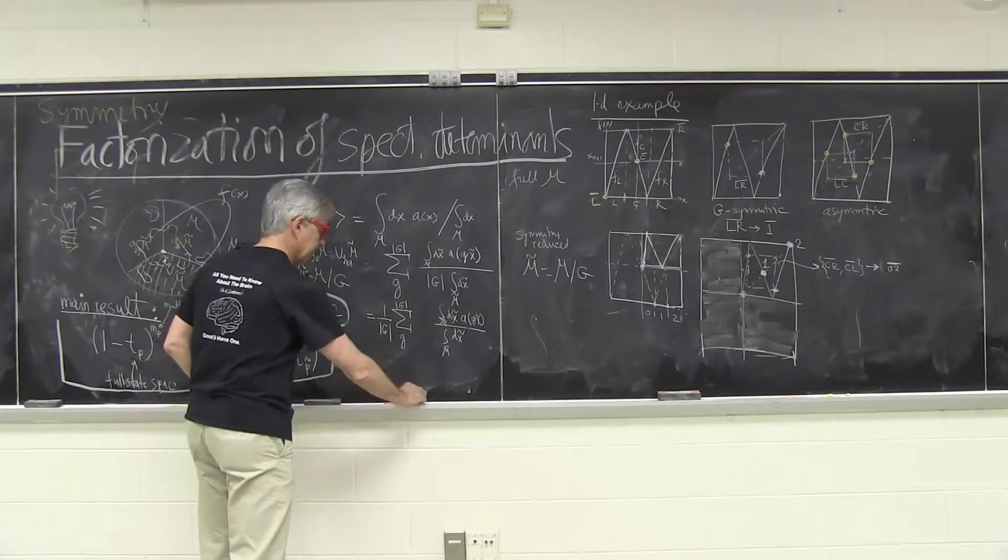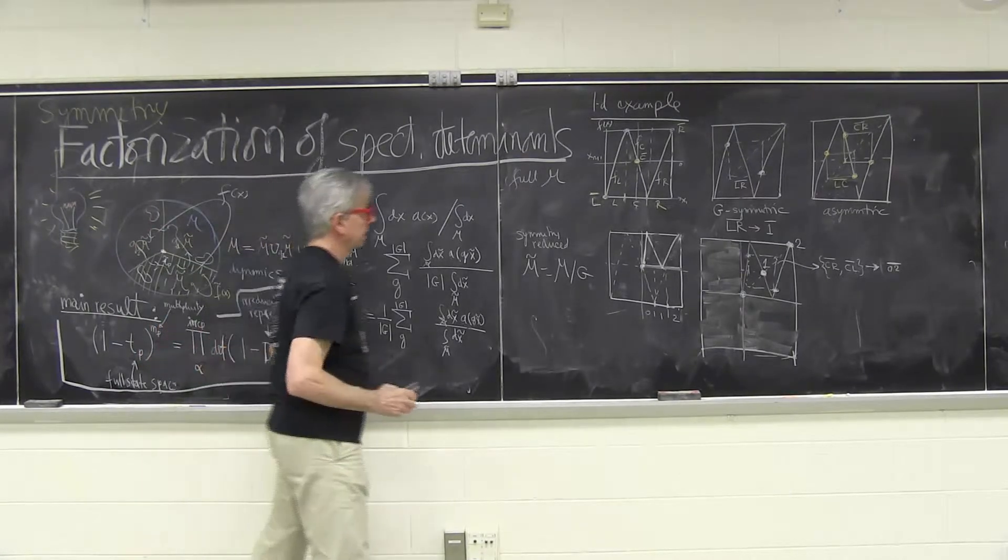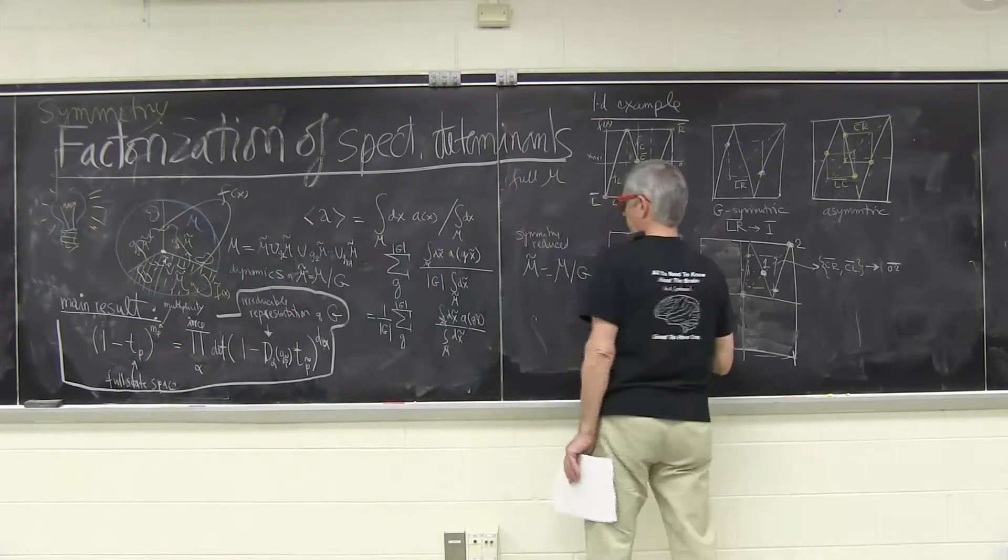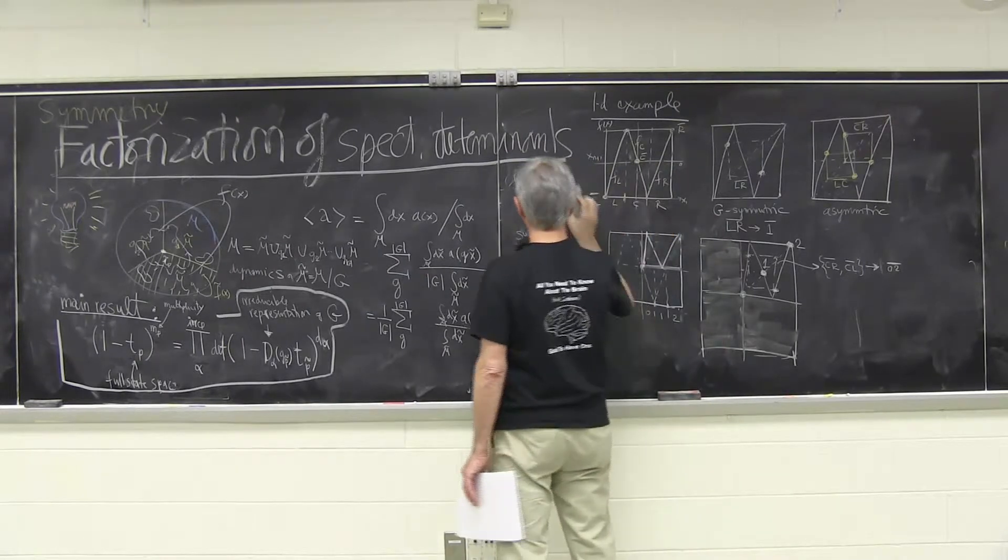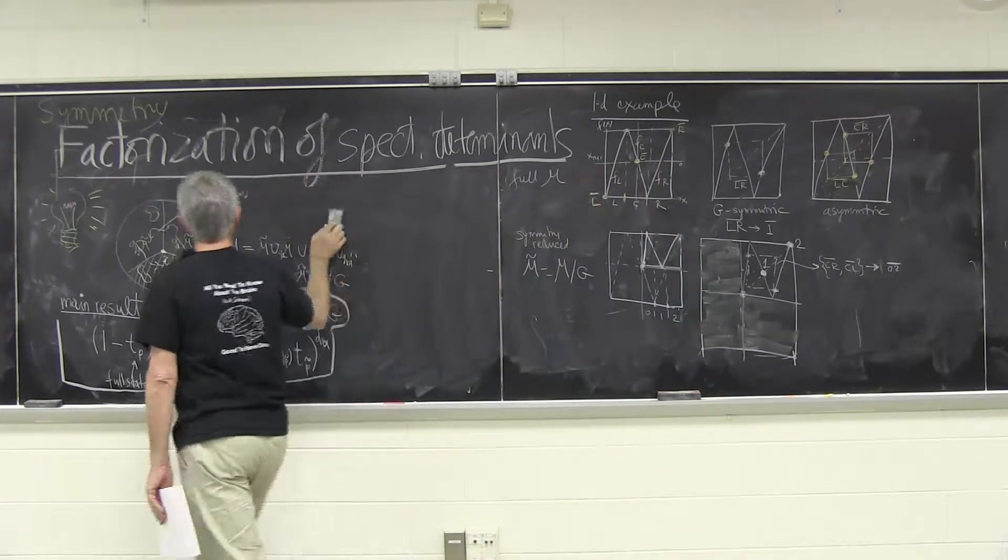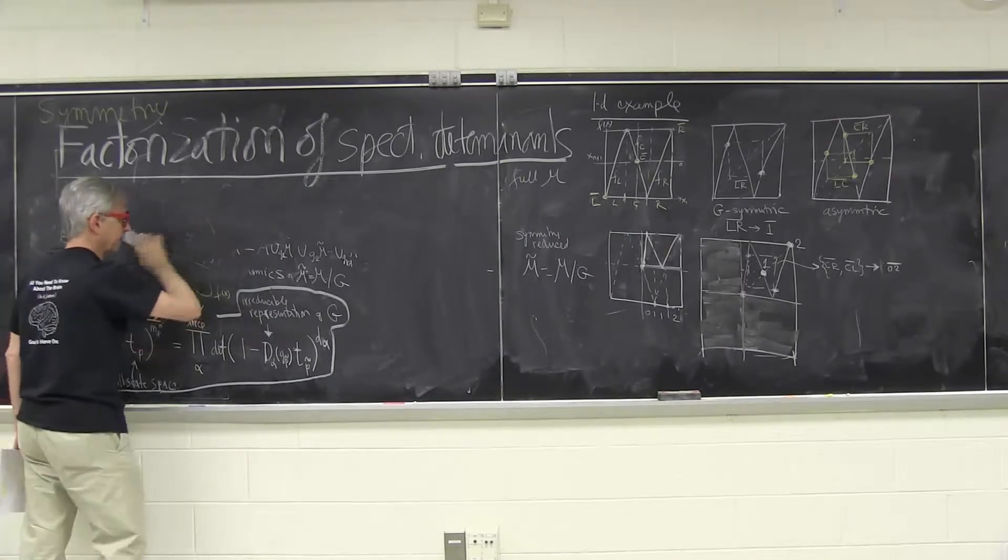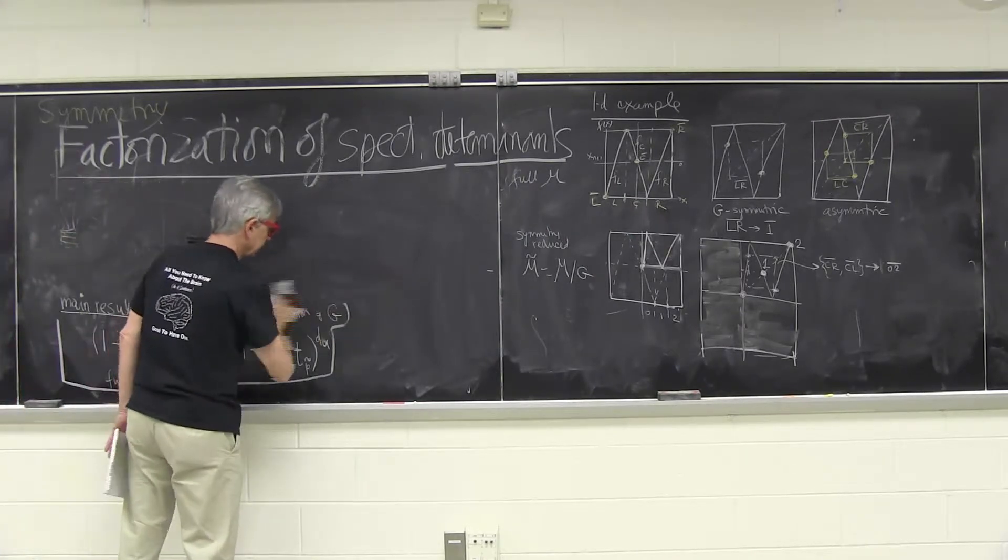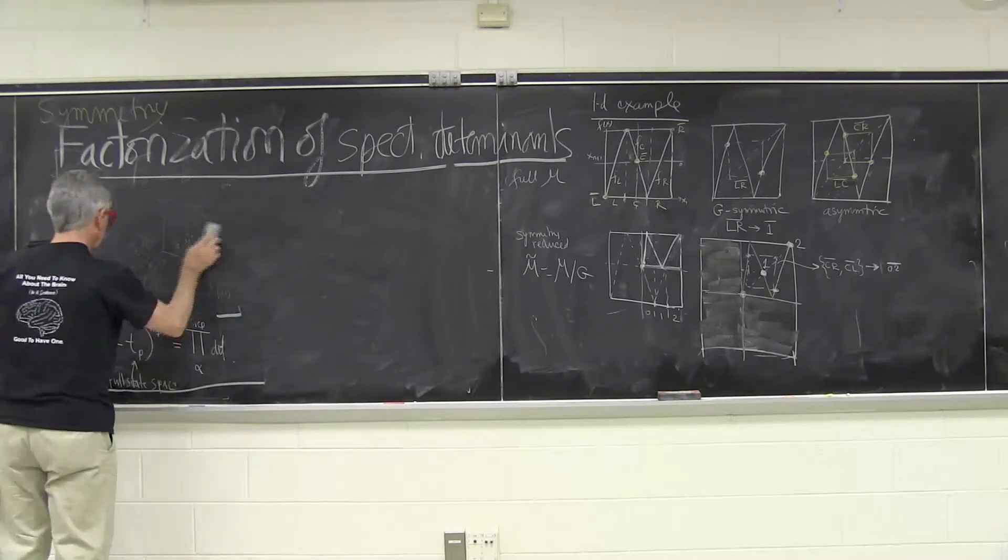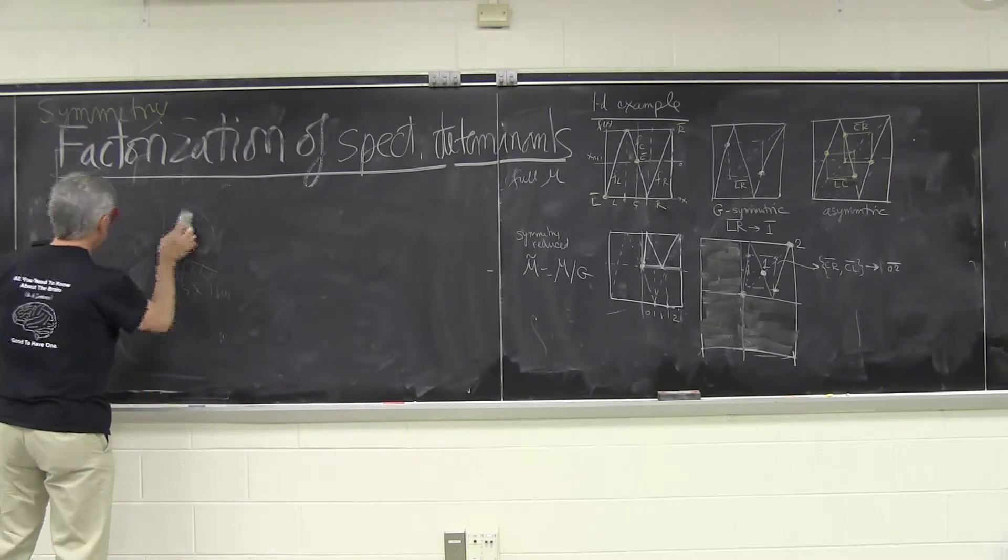I'll erase it for now and work out what you do in the example where you only have one discrete symmetry. The group has only two elements, identity and reflection or rotation. And I'll work it out in detail.